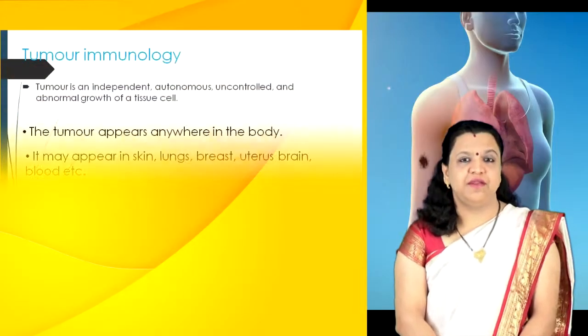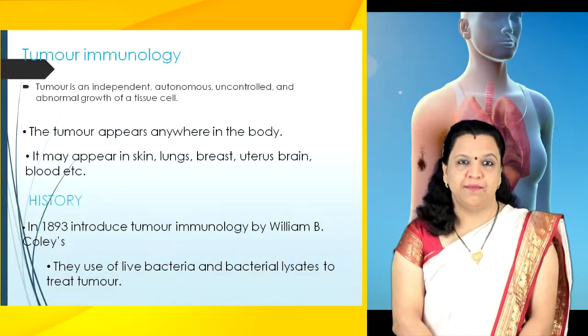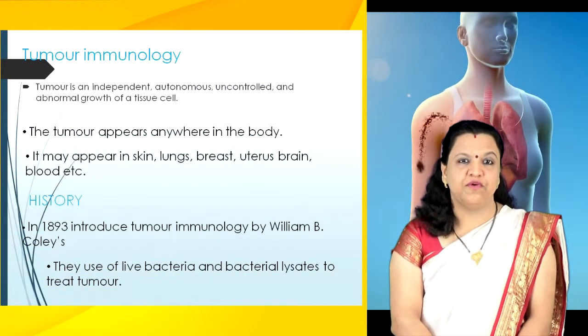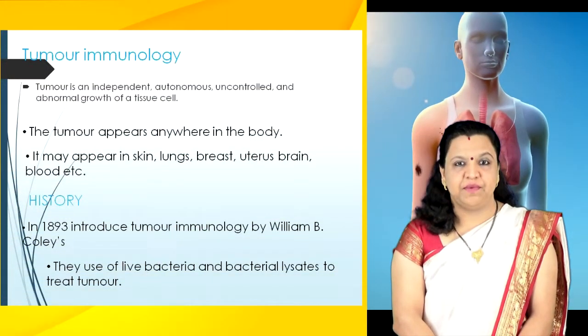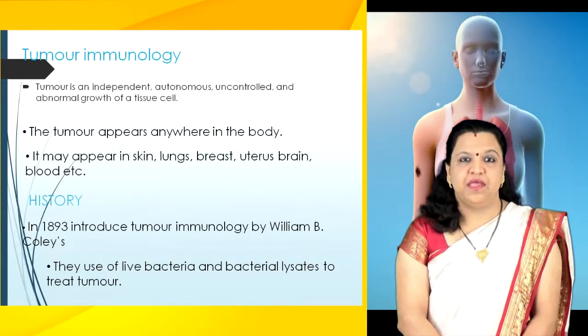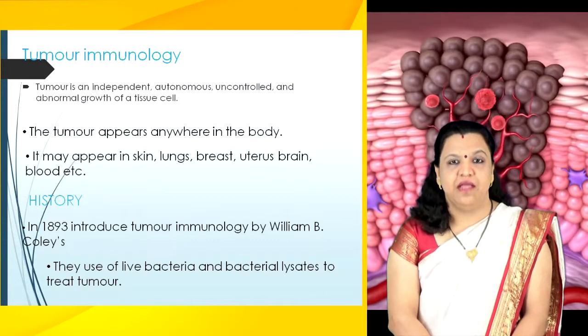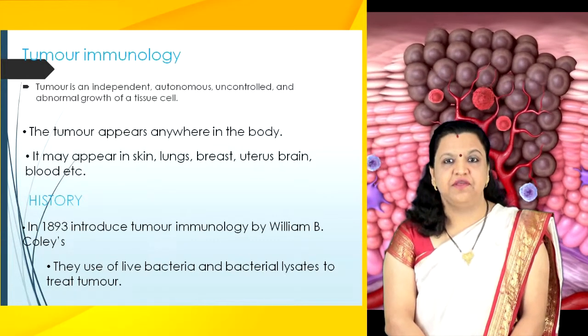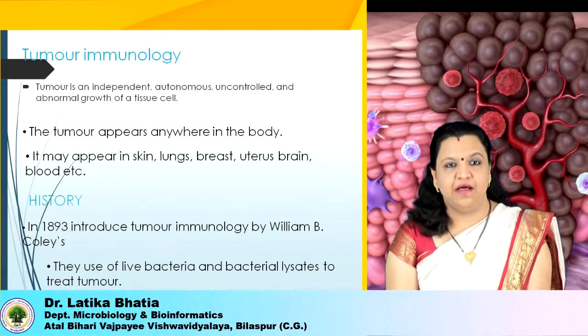A tumor is an independent, autonomous, uncontrolled, and abnormal growth of a tissue cell. The tumor can appear anywhere in the body — it may appear in the skin, lung, breast, uterus, brain, lung, etc.